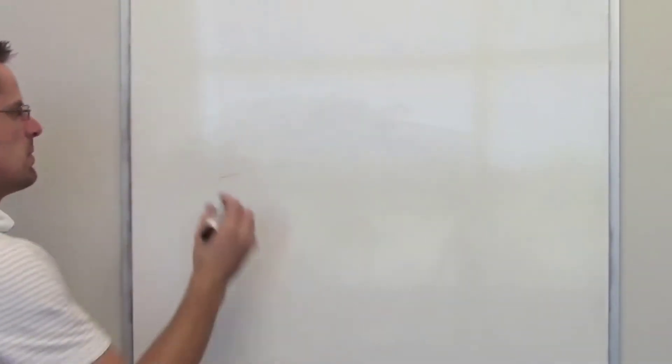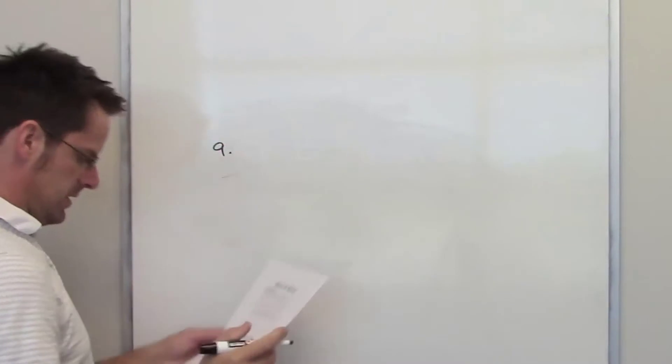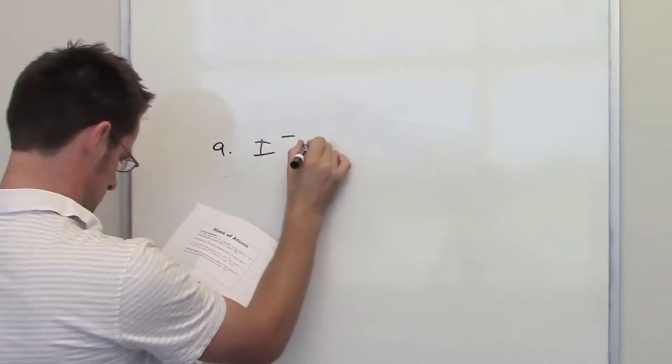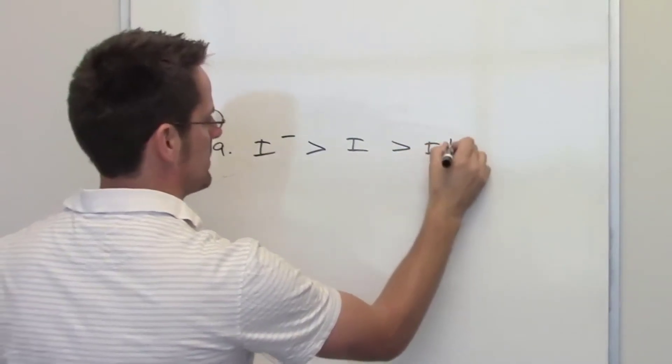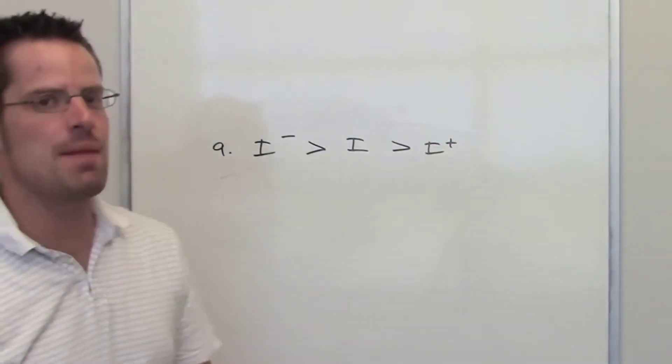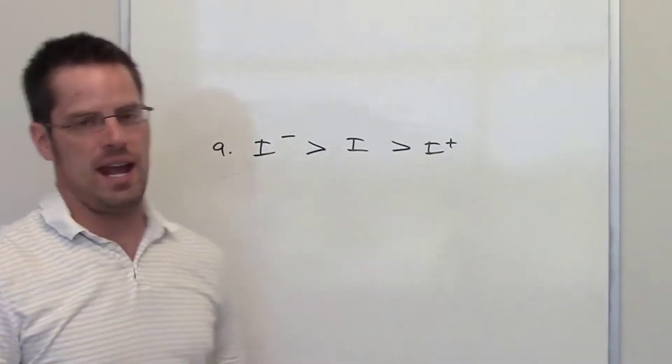In the second problem we're asked to explain the following trends in size. You've got iodide being larger in size than iodine, being larger in size than I+. When we're dealing with the same element, just different ions of that element,